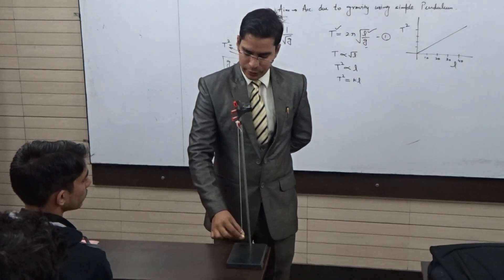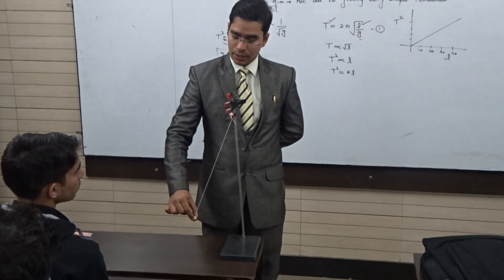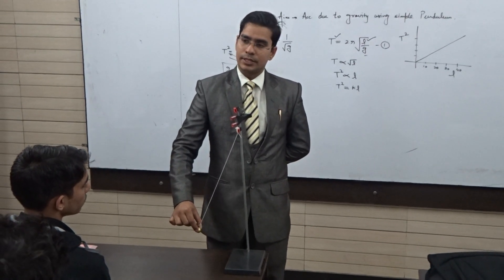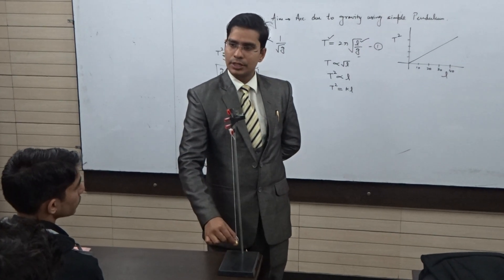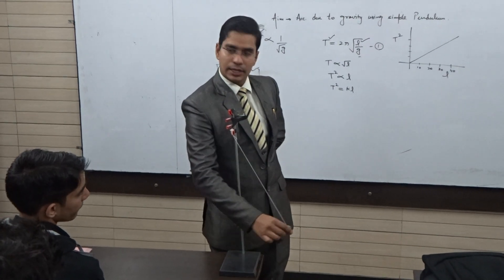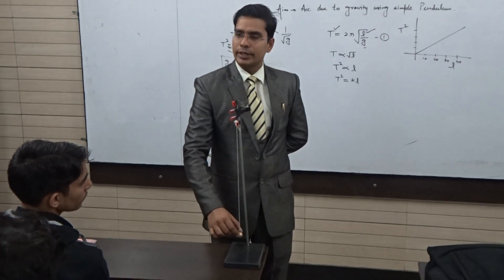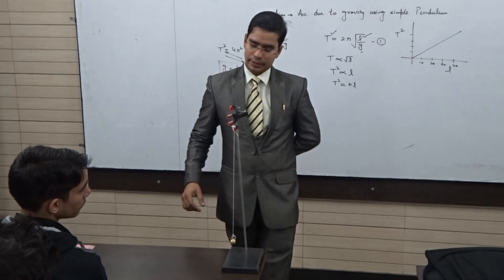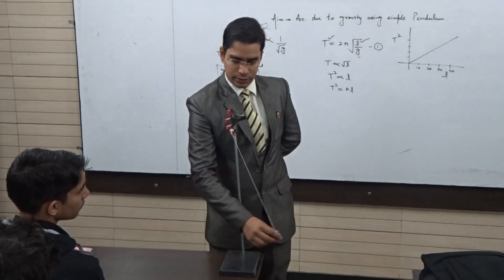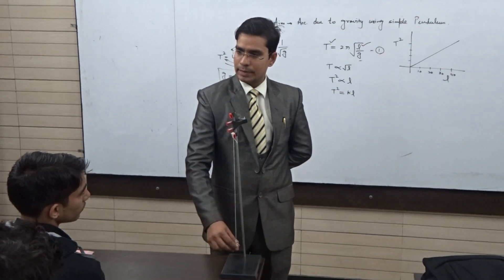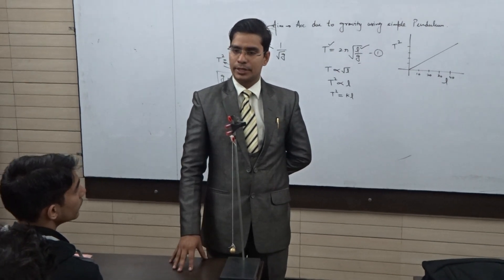When the pendulum oscillates, it moves between the left extreme (peak) position, the mean position, and the right extreme position. Students often make mistakes when counting one time period — they often count incorrectly by marking each swing as one period. But counting just from mean to extreme and back is only half of the time period.